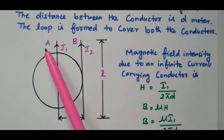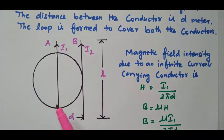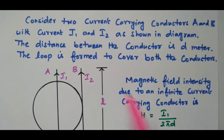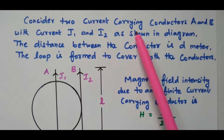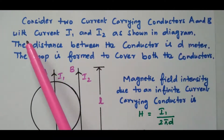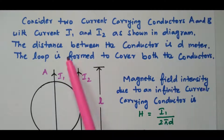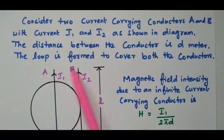We have two conductors A and B, with currents I1 and I2. The circular current loop covers conductor A and B. The diameter is D and the length is L meters. Consider two current carrying conductors A and B with currents I1 and I2 as shown in the diagram. The distance between the conductors is D meters and the loop is formed to cover both the conductors.